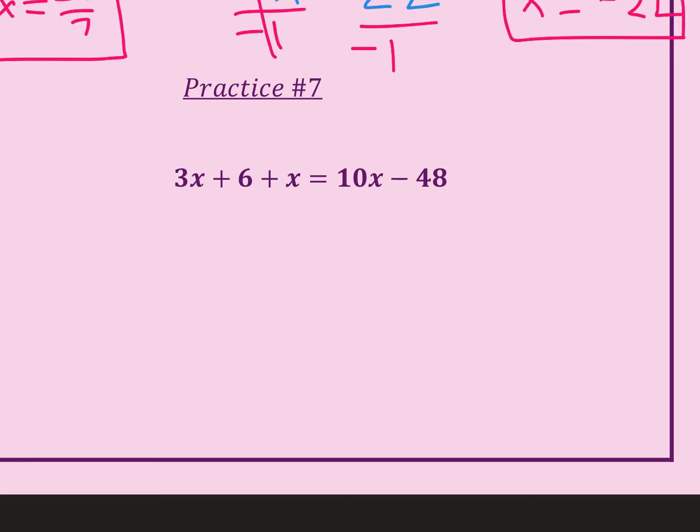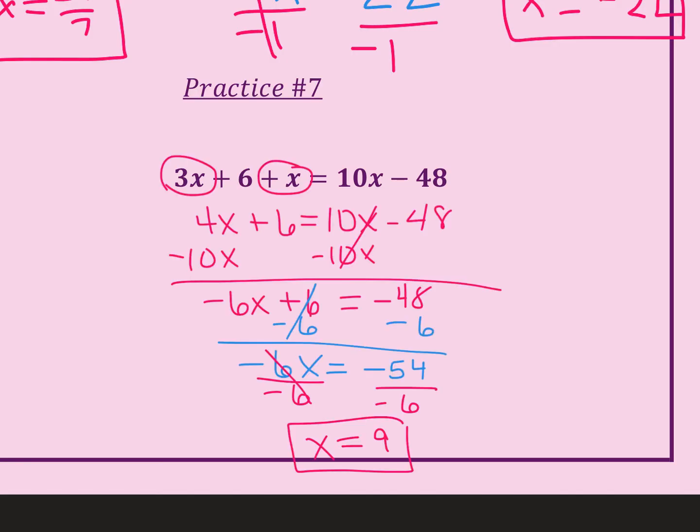Go ahead and pause this video here. So that first step was our extra one. Always combine like terms if you can. So 3x + x was 4x + 6 = 10x - 48.